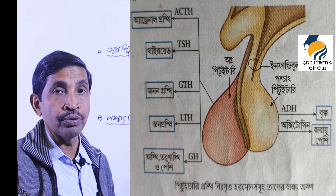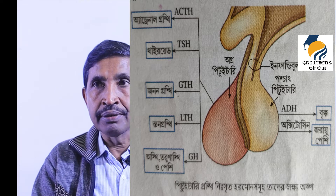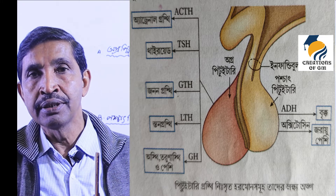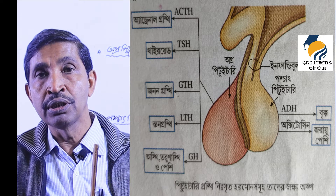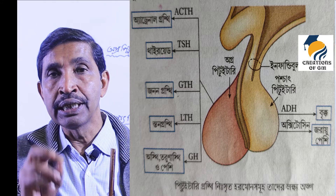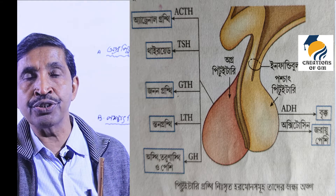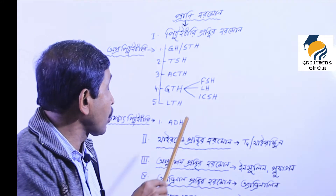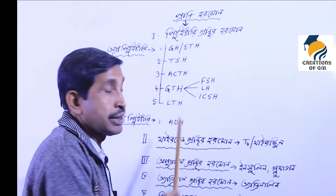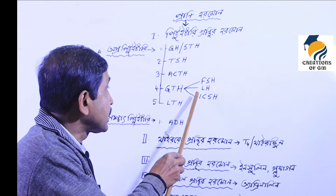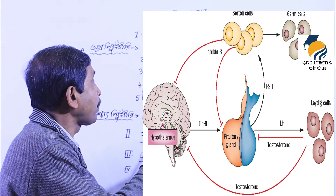The second is luteinizing hormone (LH). Luteinizing hormone controls pregnancy and the reproductive state. It controls progesterone — a specific hormone — and helps in corpus luteum formation, assisting in maintaining pregnancy.